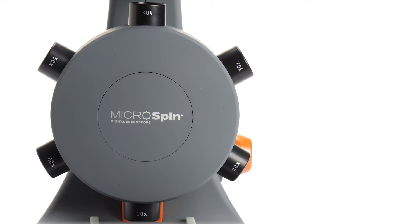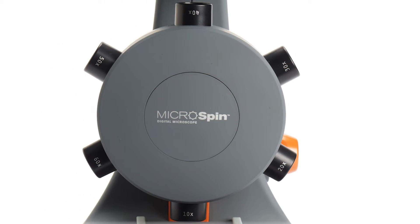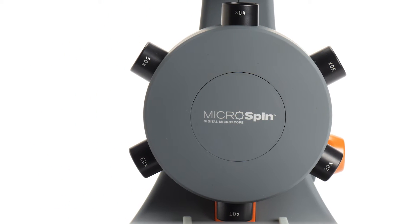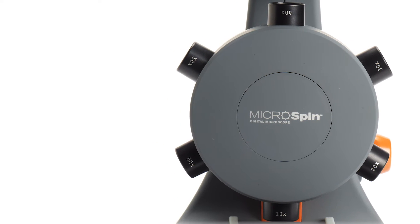The 2 megapixel CMOS imaging sensor provides an additional 10 times magnification for a total magnification of 100 to 600 times.